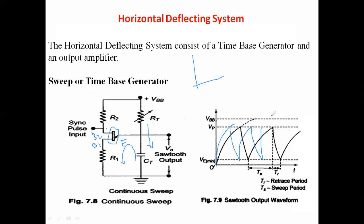We have already seen the sweep generator circuit in signal generators. Here we have a sweep period and a retrace period. The discharging period - after reaching the peak value when the capacitor discharges - is considered the retrace period. The time required to charge from the minimum value to the peak value is considered the sweep period. Like this, we can produce the sweep voltage using the sweep generator with UJT.